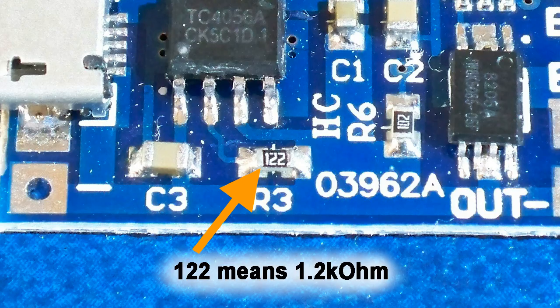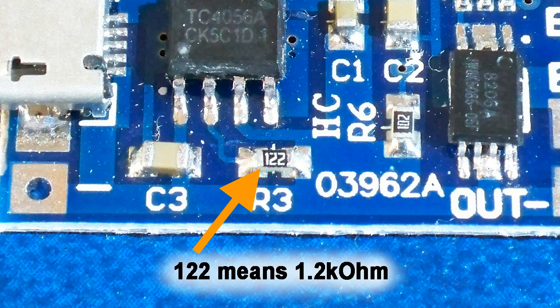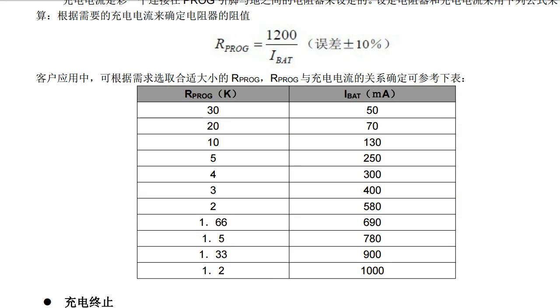It comes with a 0805 size 1.2 kOhm resistor soldered on which means that the charge current is about 1A. My battery's maximum charge current is 300mA and according to TC4056A's datasheet I have to replace that resistor with more than 4 kOhm to not kill the battery.